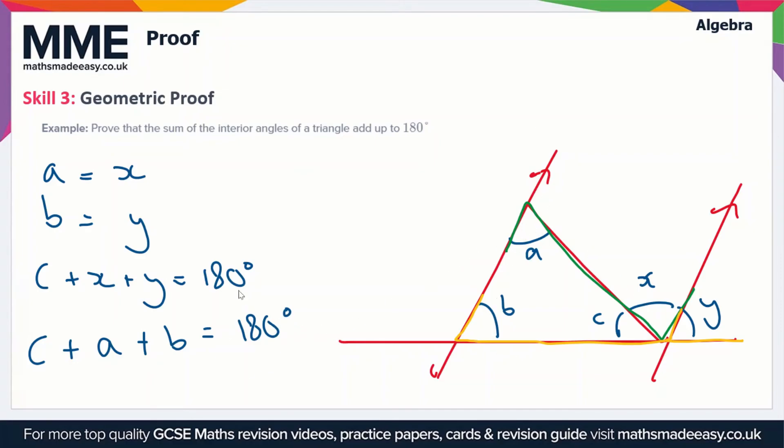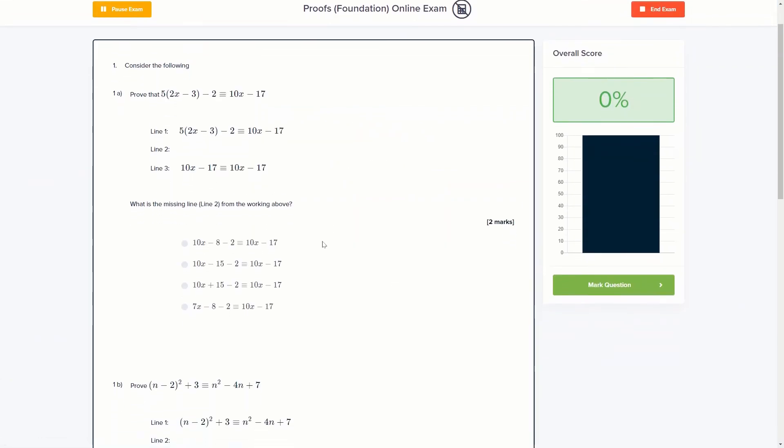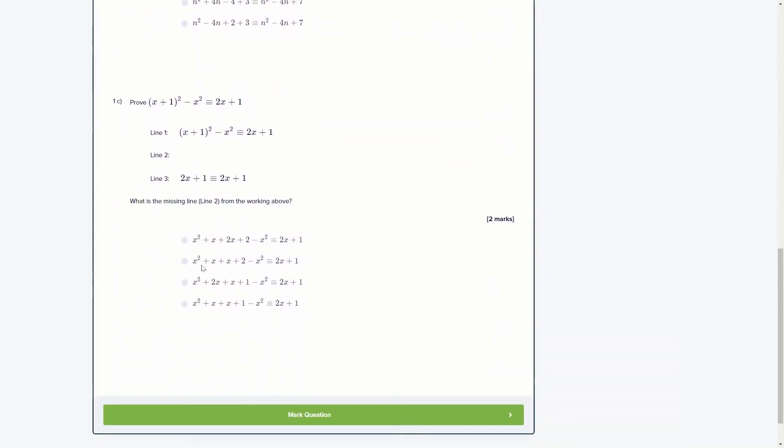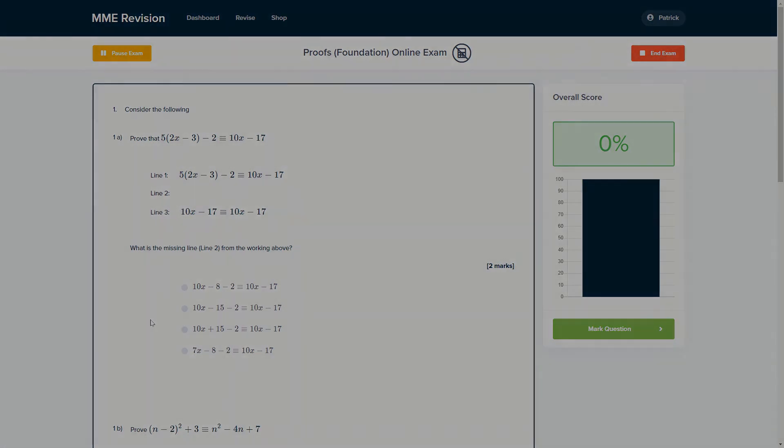If you want to try and practice some proof exam-style questions, you can do so with our online exam. This is available through our revision platform. If you take the test, you'll find loads of different questions to have a go at. There's a variety of different question types, all of which you'll receive instant feedback on. It's a good way of keeping track of your progress and finding out what you can do to improve for your actual exam. If this is something you're interested in, you can click the link below.